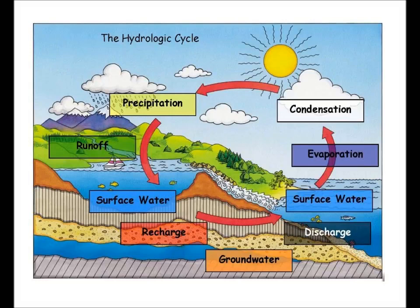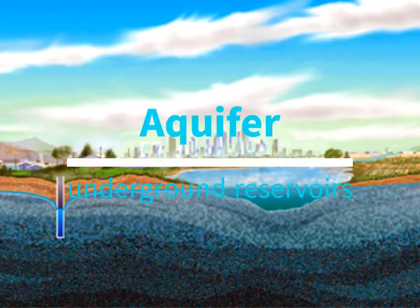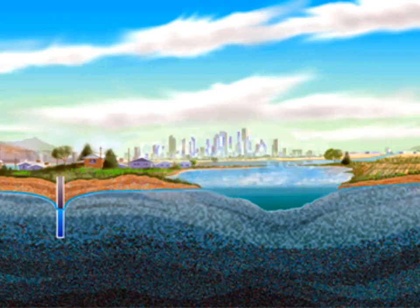Impervious surfaces, such as pavement, can reduce the rate of groundwater recharge and limit our water supply. Groundwater is essential to keep our rivers and taps flowing. It moves very slowly, sometimes as little as inches per year, through geologic formations called aquifers. Aquifers are typically made of gravel, sand, sandstone, or fractured rock, like limestone. Water can move through these materials because they have large connected spaces, called pores, that make them permeable.